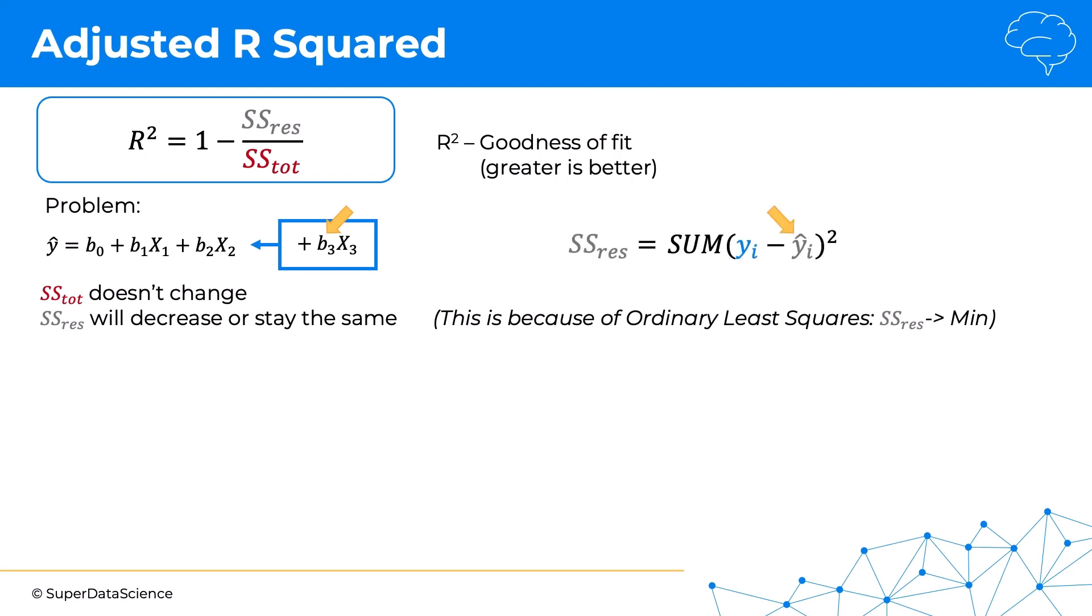When we add this new variable x3, the ordinary least squared method is going to look for coefficients b3 that improve the y hat predicted values. As long as it finds a coefficient b3 where the y hat values are better than they were before, closer to the actual values, then the residual sum of squares will improve. It could improve by a lot if the prediction is much better now, or it can improve by a tiny little bit if the prediction is a little bit better.